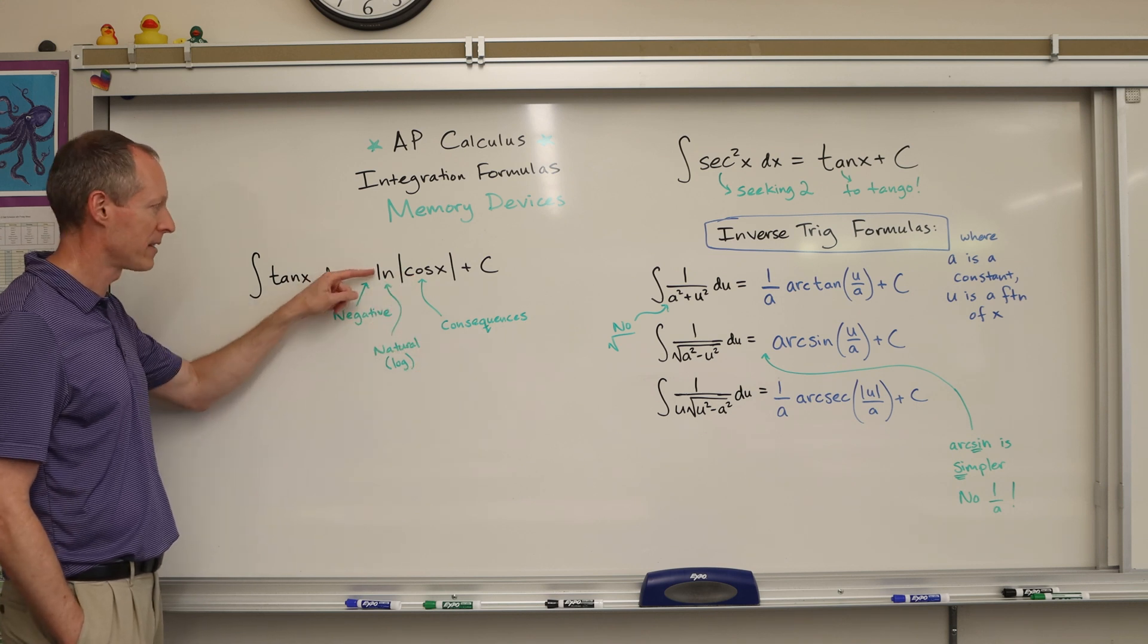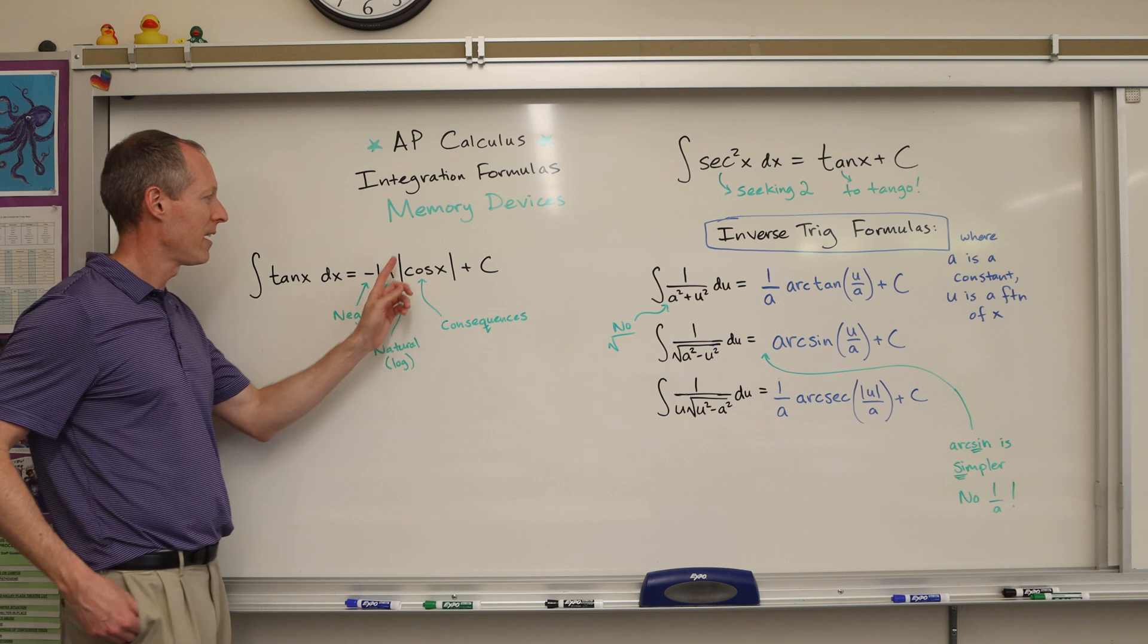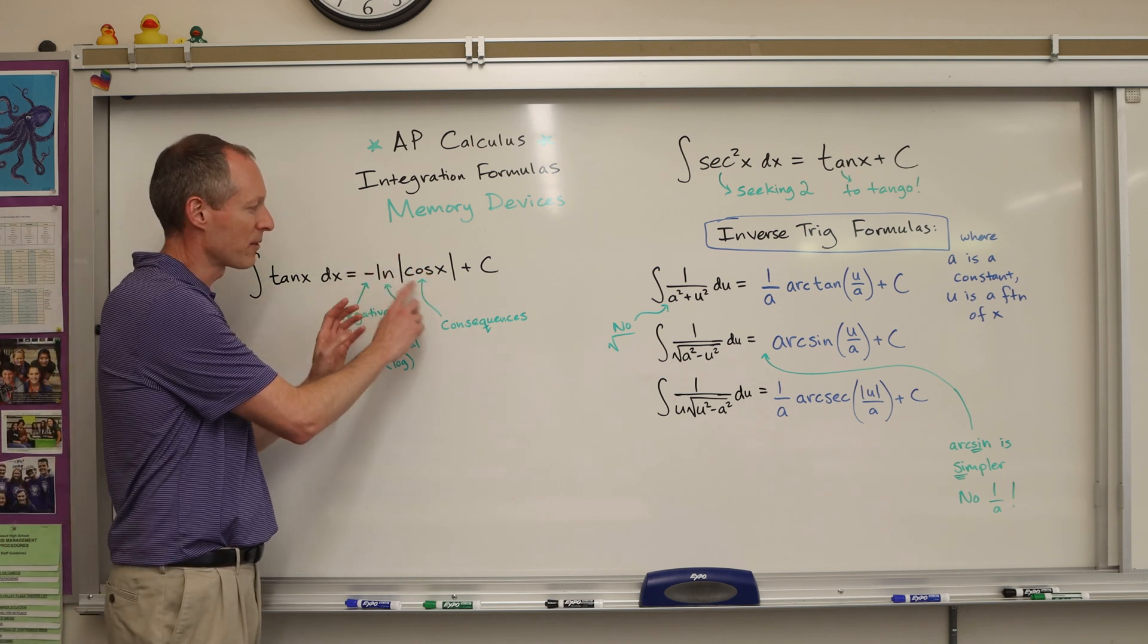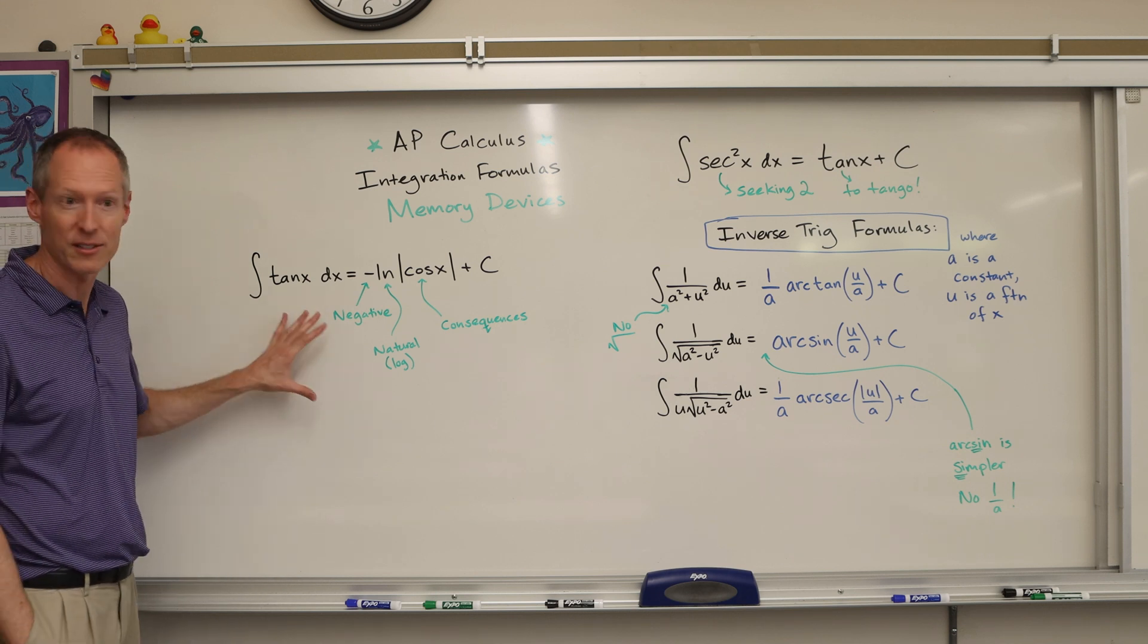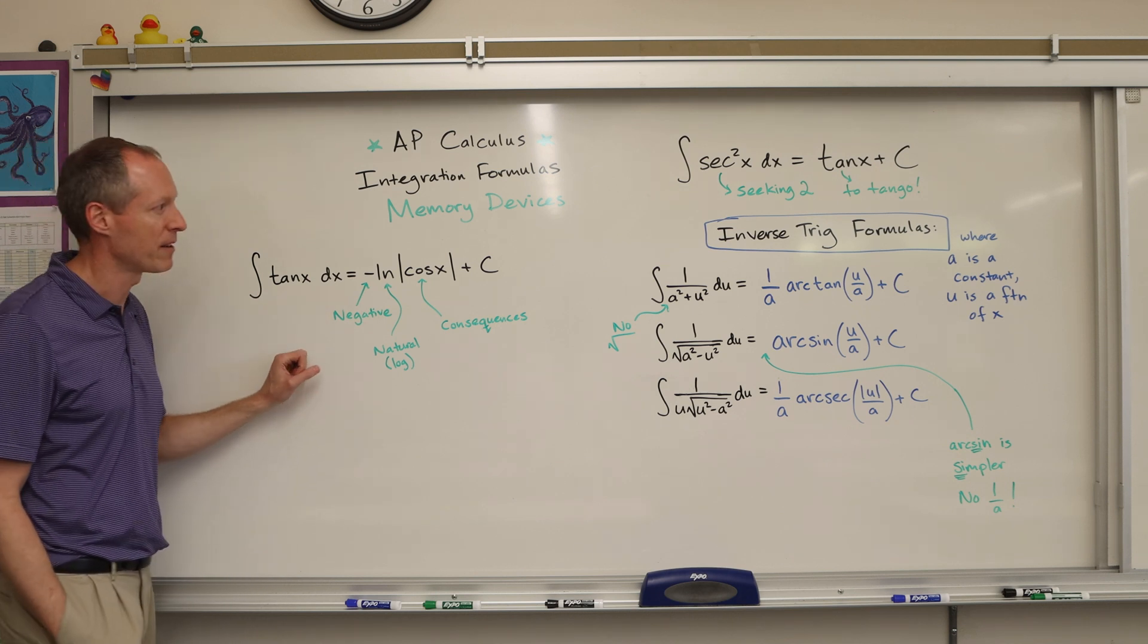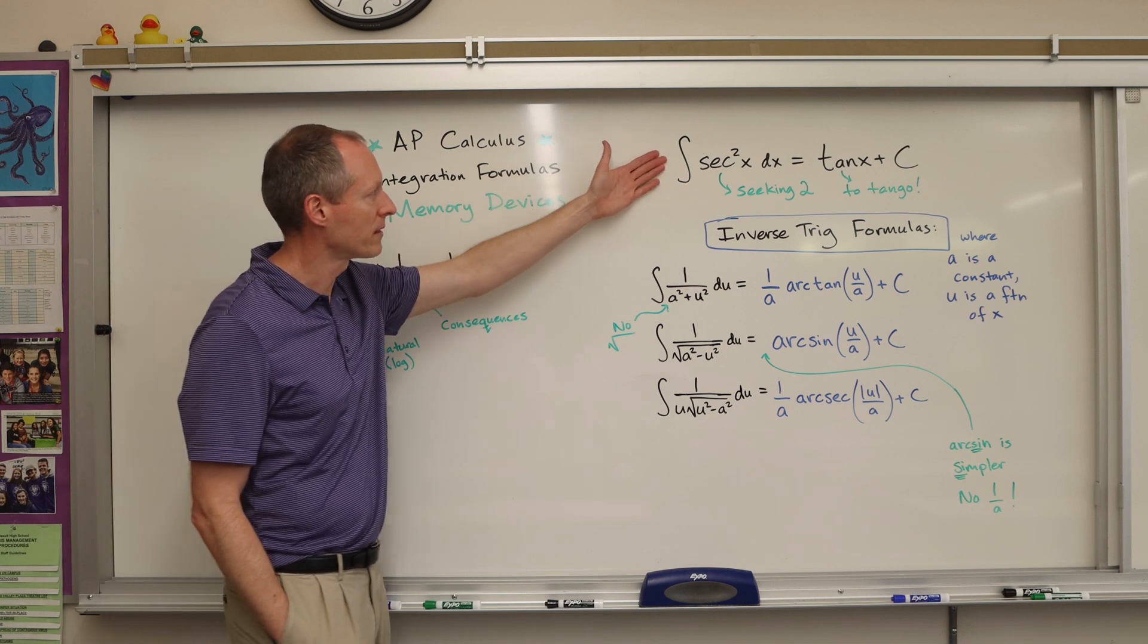So negative, negative sign, natural log, and then absolute value of cosine, so I think cosine consequences. So negative natural consequences. So my students like this one, so I'm hoping that helps you memorize that formula. Here's another one, an example.